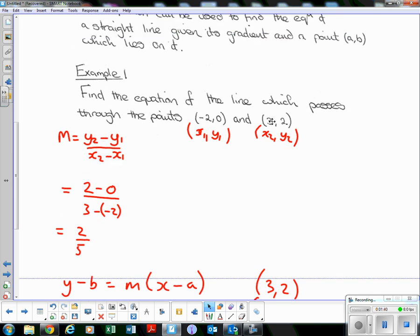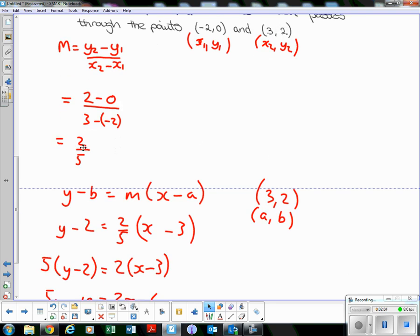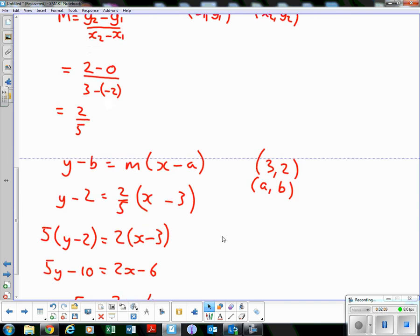I've got a choice here: I can either pick (3, 2) or (-2, 0). I'm going to pick (3, 2) just because both values are positive. Even Higher Maths candidates still make silly mistakes with minus signs, so I'm just going to try and make life as easy as possible for myself and pick (3, 2). The first number is the a, the second number is the b. Let's substitute: I've got the gradient of 2/5, I've got a and b, 3 and 2.